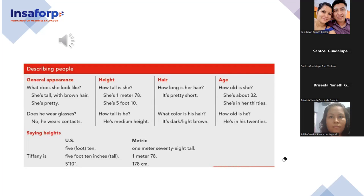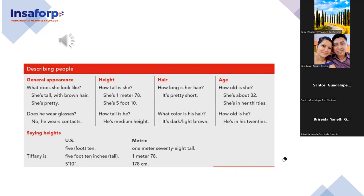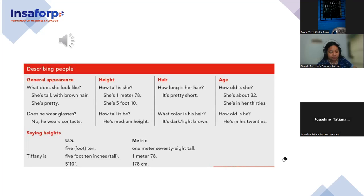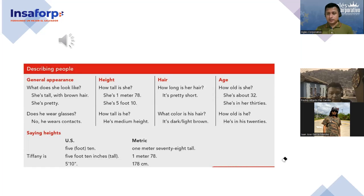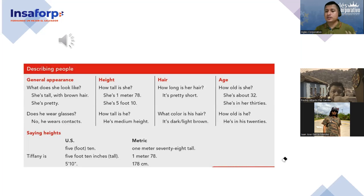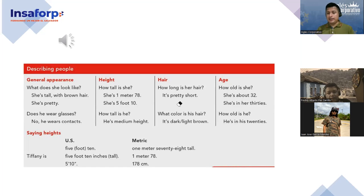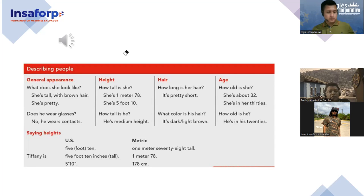Remember, this is about describing people — your father, your mother, your son, your daughter, your husband, your wife, whoever you want to describe. You need to use this vocabulary and structure to talk about somebody, to describe the way he or she looks.